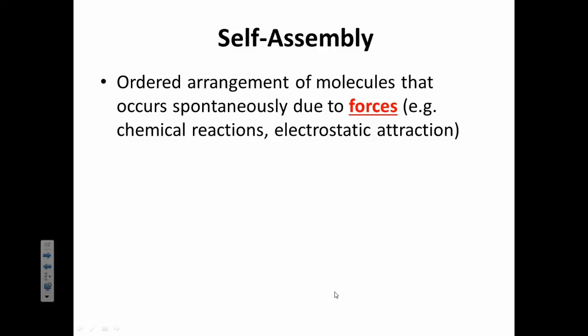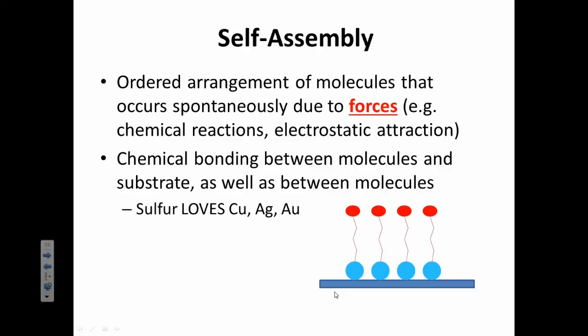Self-assembly is another way that you can make a thin layer. Knowing that certain atoms love to bond with other atoms, you can take advantage of that and cause things to self-assemble because of these forces. So, for example, sulfur loves copper, silver, and gold.